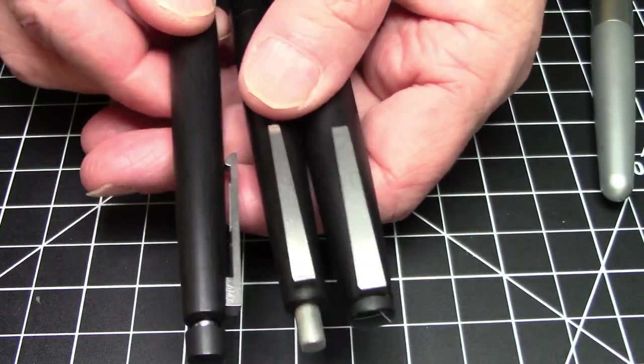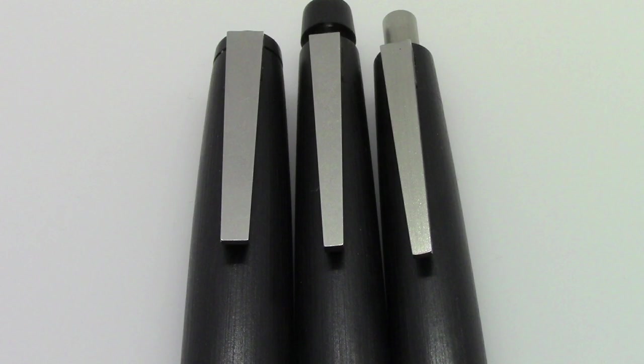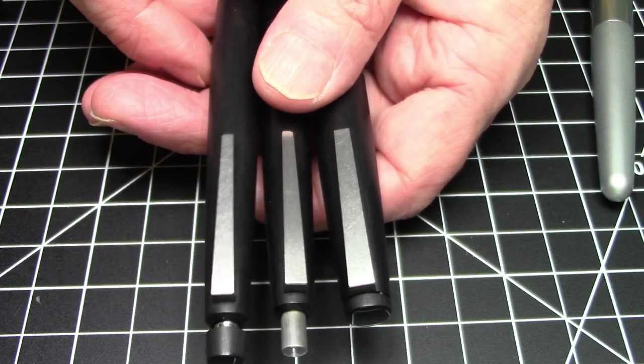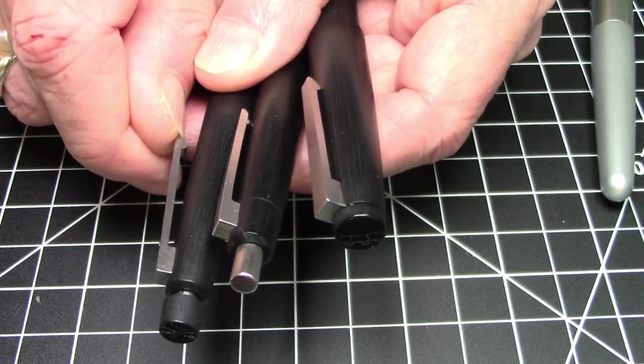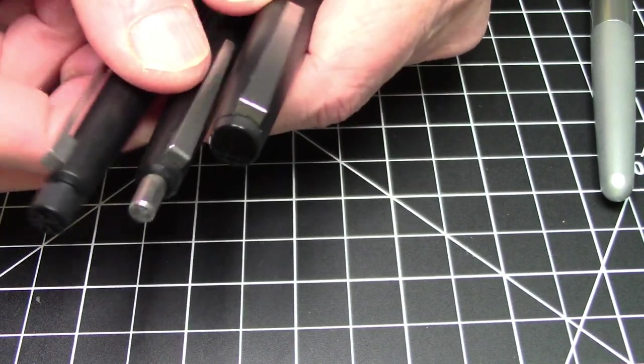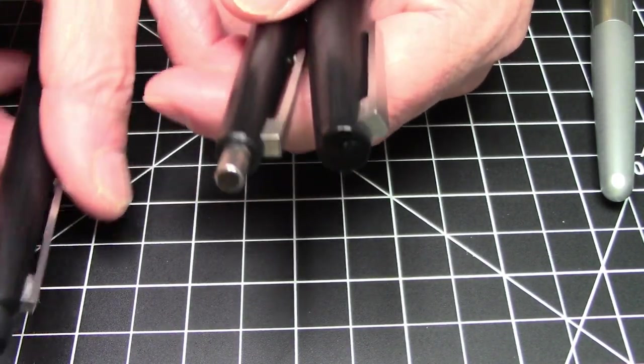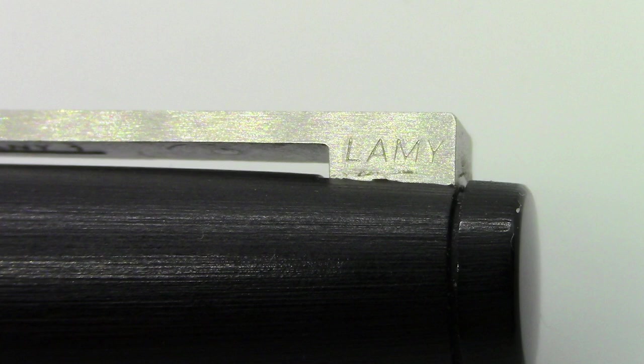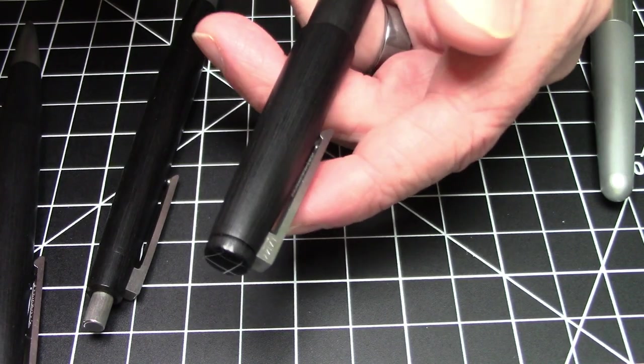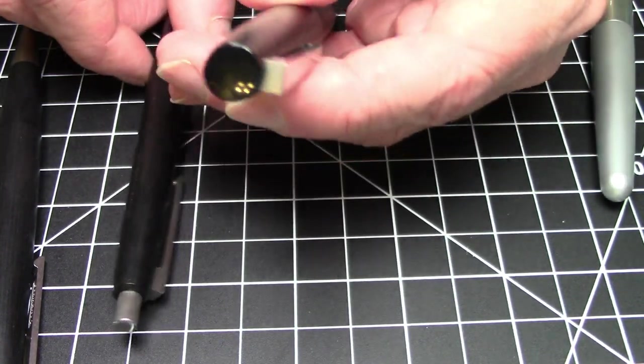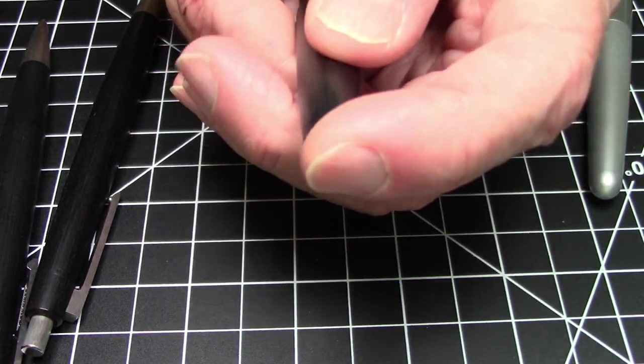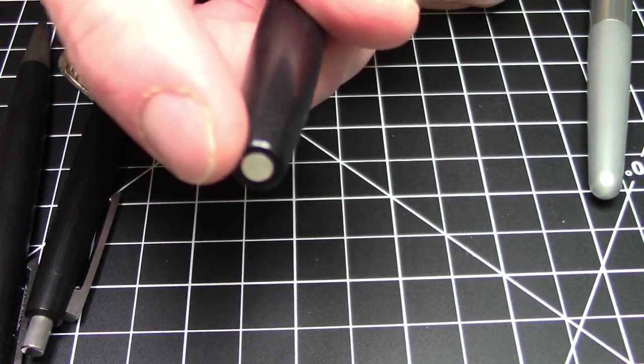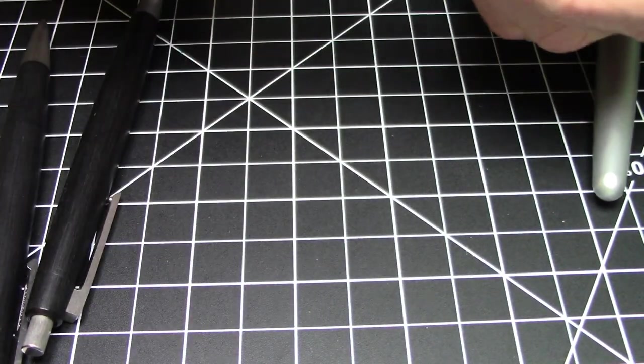In terms of overall consistency of design it's pretty consistent. The clips are not identical. They're slightly different shapes and sizes but they're obviously styled pretty much identical. They're all spring loaded clips which are very nice. On the fountain pen and on the pencil but not on the ballpoint it does say Lamy on the side of the clip but that's the only place you'll see branding here.